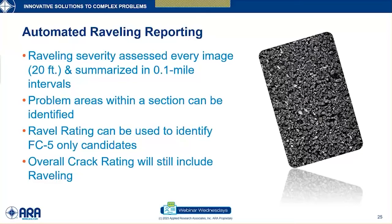We can now report raveling at any given interval. Each LCMS image is about 20 feet long, and we can summarize this data at tenth-of-a-mile or section level. Although FDOT doesn't do surface treatments like slurry seals, they do have FC-5 only candidates. FC-5 is an open-graded mixture with high void content—good for drainage but prone to raveling when aggregates are dislodged. We can now identify potential FC-5 candidates more easily. Importantly, any area with raveling counts toward the highest severity cracking percent, so identifying raveling was critical.